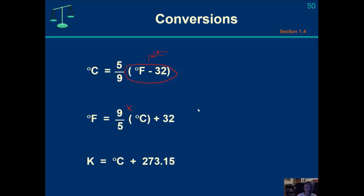The conversion you'll do most often is converting Celsius to Kelvin. It's a very simple conversion — all you do is add 273.15 to the Celsius temperature and that gives you the Kelvin temperature.